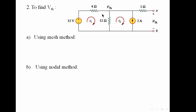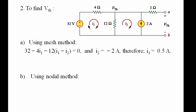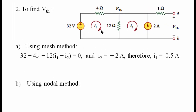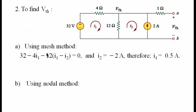In order to find the voltage here, we can apply mesh method or the nodal method. To solve using the mesh method, first of all, we need to define the currents I1 and I2. Now we need to write the equations for I1 and I2. So we write 32 minus 4·I1 minus 12·(I1 minus I2) equals 0. Since we have a current source in I2, we can directly say I2 equals 2 amperes. But since the direction of I2 is opposite to the direction of the current source, we write I2 equals minus 2 amperes.